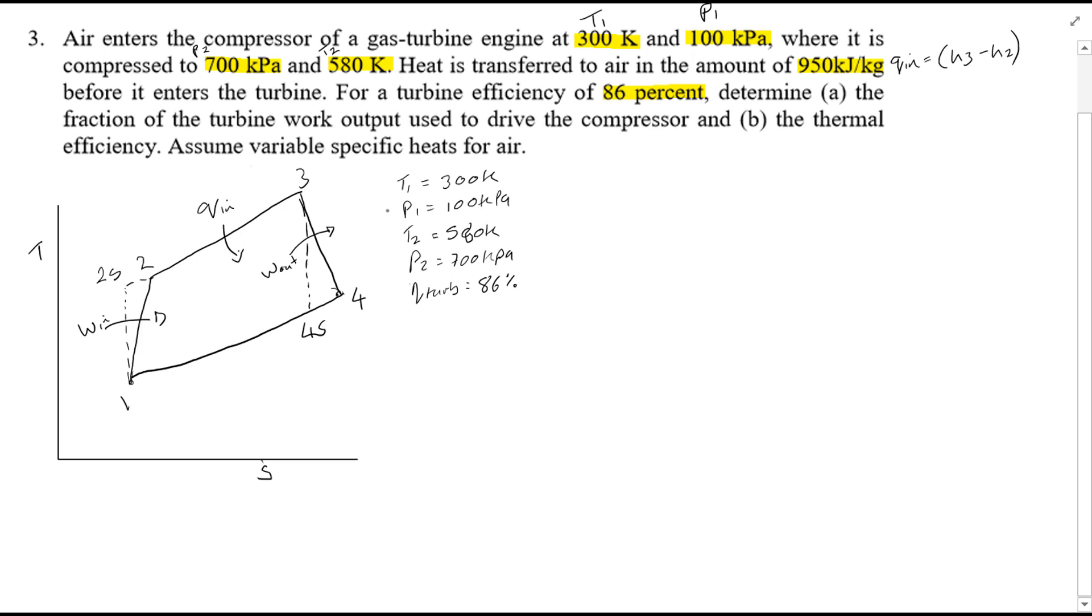So what this means is Cp is not assumed constant, and therefore you should be using the thermodynamics property tables. For part A of the question we've been asked to find the fraction of the turbine work output used to drive the compressor. The fraction of this work can be expressed as the work of the compressor divided by the work of the turbine.